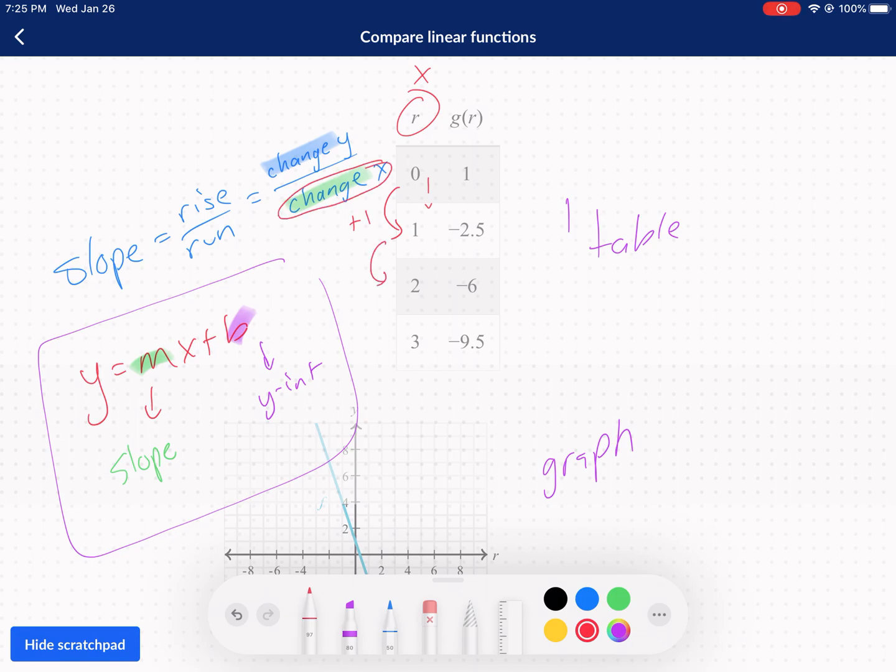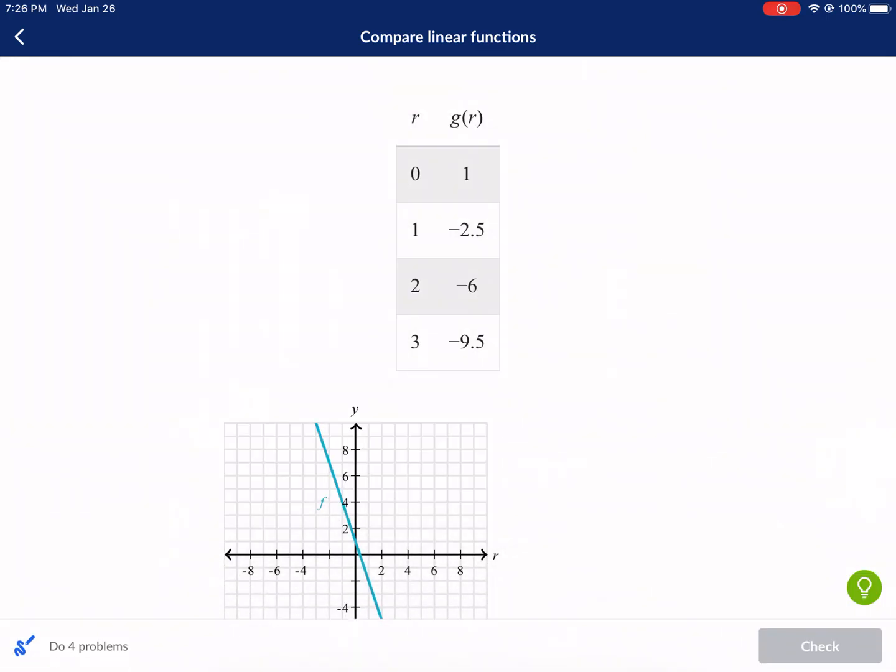So as this changes one, that's my change in X right here, okay? As this goes up one each time, you'll notice that my Y decreases, looks like negative 3.5 each time. So I can write this as a slope as negative 3.5 over one. Okay, so that's my rise is negative 3.5. It's going down each time 3.5, and it's running, meaning moving left to right, my change in X one. So this is my slope.